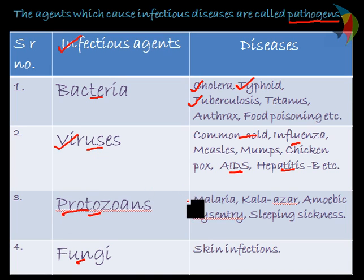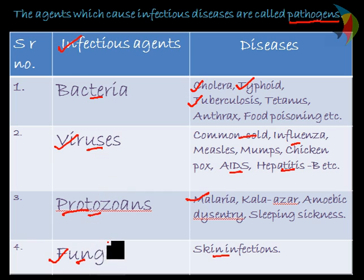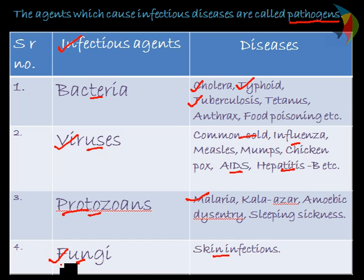Protozoans, as we have seen earlier, Plasmodium causes malaria and its vector or carrying agent is the mosquito. Kala-azar, amoebic dysentery, and sleeping sickness are all examples of protozoan diseases. Fungi causes various types of skin infections — rashes may be observed, or there can be total dryness of the skin. There are various types of skin infections caused due to fungi.